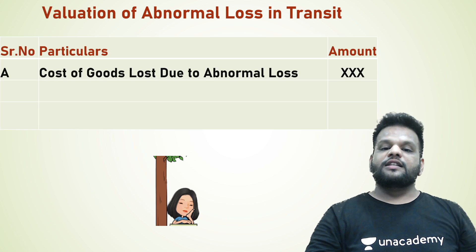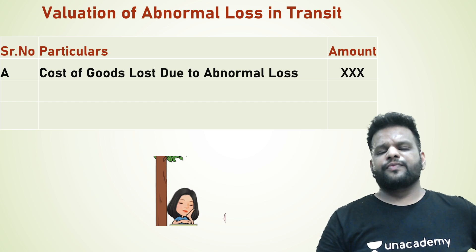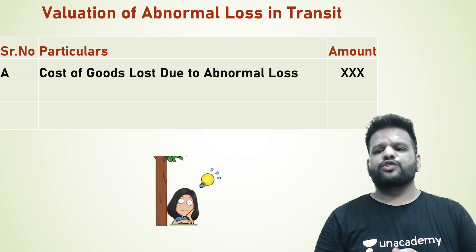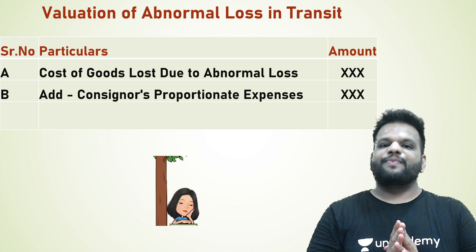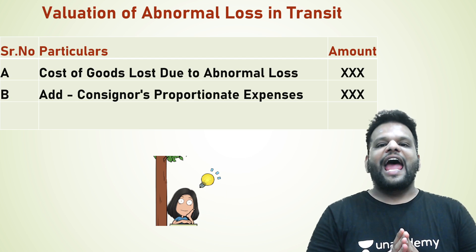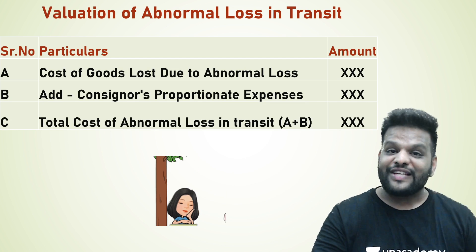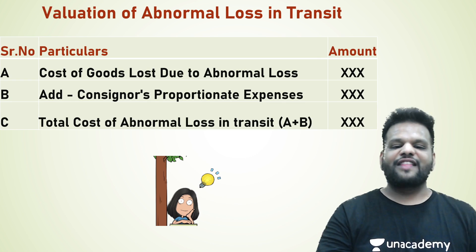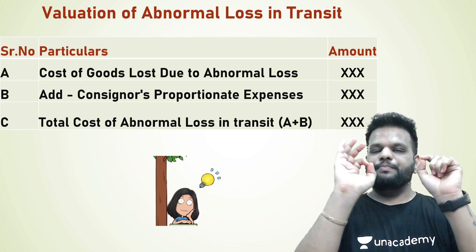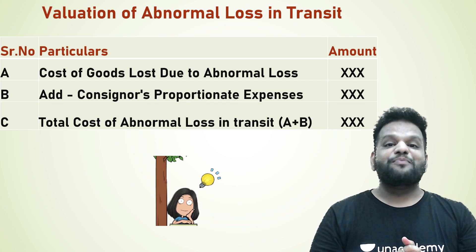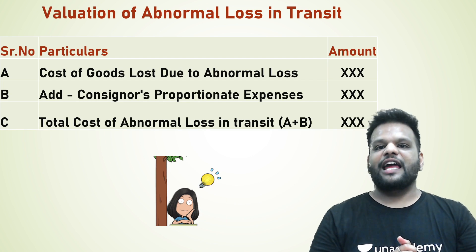If the abnormal loss happens in transit, first we add the cost of goods, then we add the consignor's proportionate expenses. So the value of abnormal loss in transit = Cost of Goods (A) + Consignor's Proportionate Expenses (B), i.e., A + B.